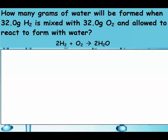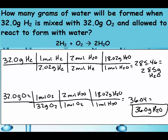Figure out how many grams of water will be formed when 32 grams of hydrogen react with 32 grams of oxygen. Your grams of oxygen should have produced the smaller amount, which was 36 grams of water. So oxygen is our limiting reactant, and hydrogen is excess.